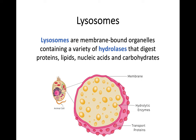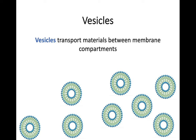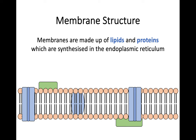Next we have lysosomes. Lysosomes are membrane-bound organelles and they have a bunch of hydrolases — enzymes that are going to digest proteins, lipids, nucleic acids, and carbohydrates. We'll talk about them more later on. We'll also mention vesicles quite a lot. They are little transport molecules and they're going to bud off from various organelles and transport materials to different parts of the cell.